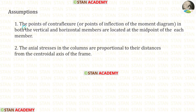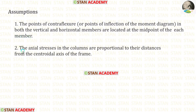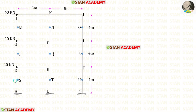Now let us see the assumptions in the cantilever method. The points of contra-flexure in both the vertical and horizontal members are located at the midpoint of each member. The axial stresses in the columns are proportional to their distances from the centroidal axis of the frame.